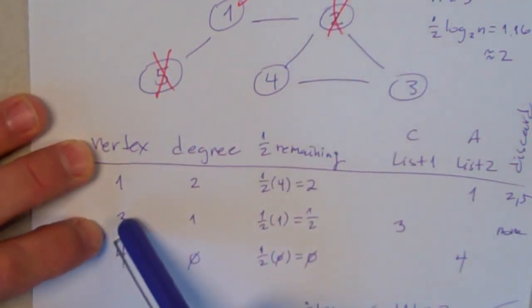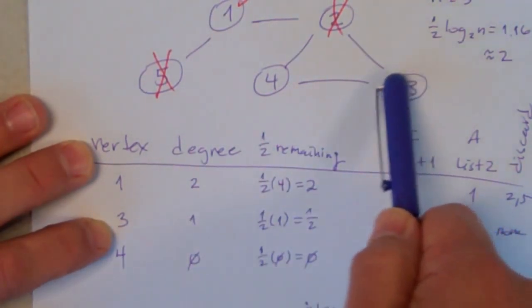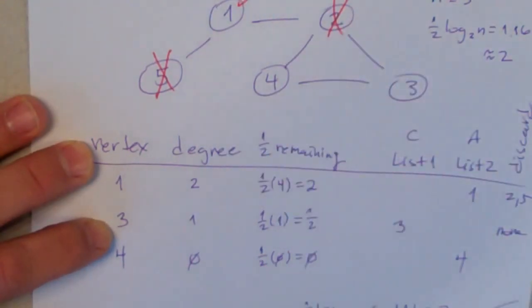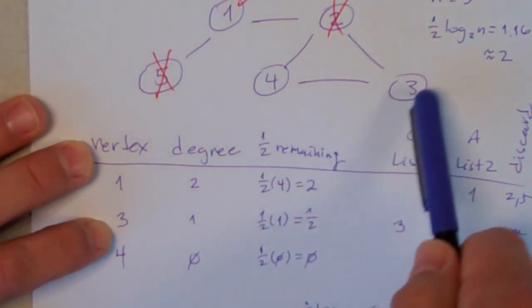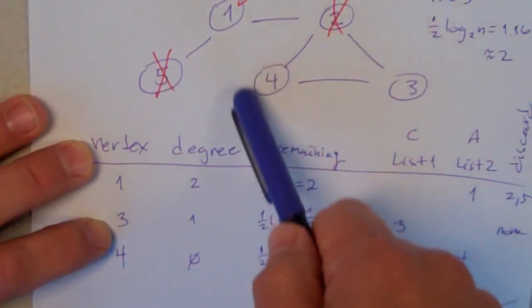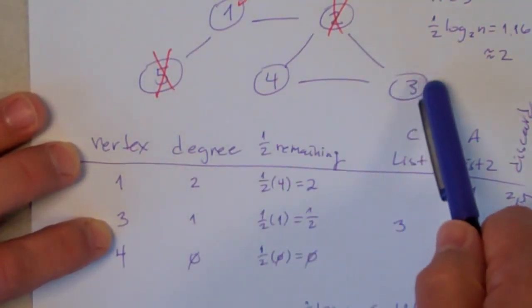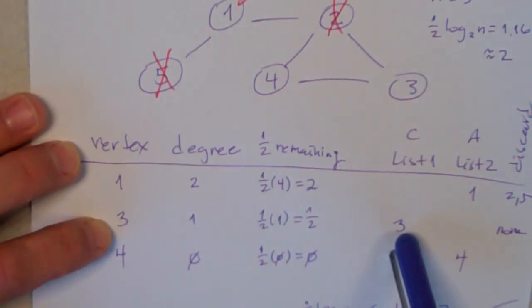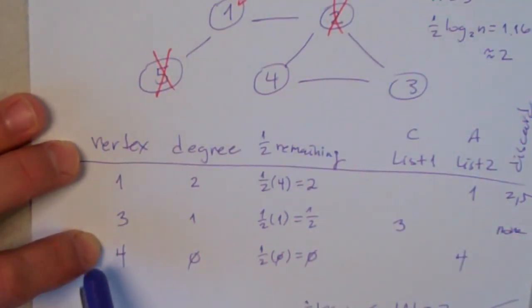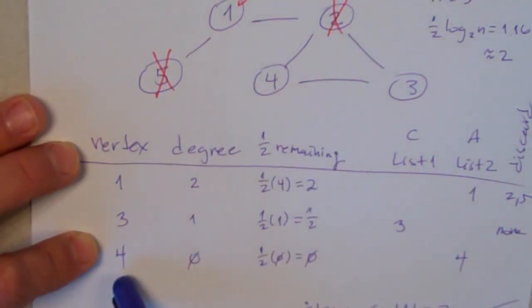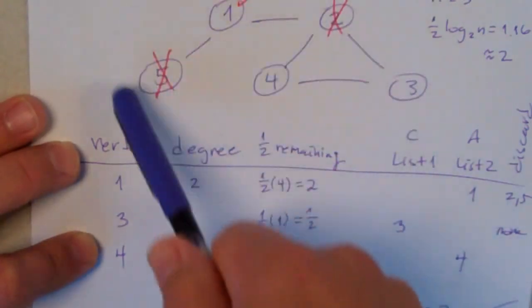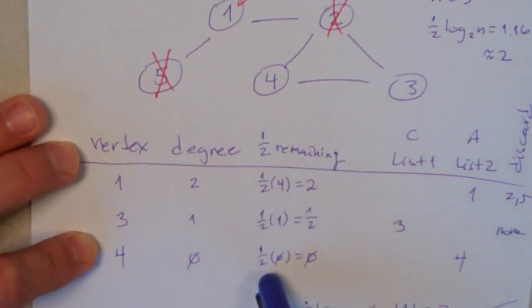So then we've eliminated these two, and we've eliminated this one. Now we only have these two left, 3 and 4. If we look at vertex 3, the degree of this one is just 1. We don't count the ones that have been discarded, so it's just 1. 1 is greater than 1/2, though. Because there's only one node left beside itself, 1/2 of 1 is 1/2. So node 3 goes to list 1, the clique list. So then we discard 3, and now we're looking at just 4. The degree of 4 is 0, because there's no more nodes left. 1/2 of 0 is 0, but 0 is not greater than 0, so we put it into list A, the anti-clique list.